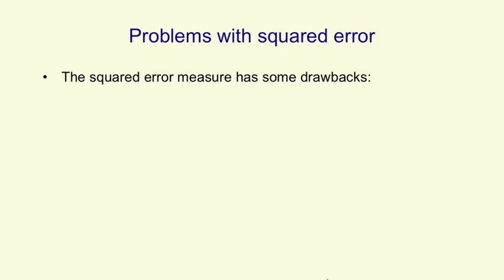Before we get back to the issue of how we learn feature vectors to represent words, we're going to have one more digression. This time it's a technical diversion. So far I've talked about using a squared error measure for training a neural net, and for linear neurons that's a very sensible thing to do.